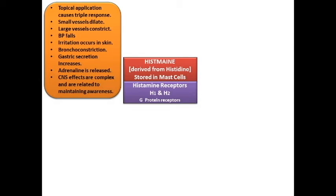The triple response also relates to dilatation of small vessels. Small vessels are dilated by histamine through the release of EDRF — endothelial-derived relaxing factor — which causes vessel dilatation. At the same time, large vessels of the body constrict. Blood pressure generally falls after injection of histamine, attributed to both H1 and H2 responses. The H1 response is an immediate fall, while the H2-mediated fall is delayed and more sustained. Irritation of skin and nerve endings can also inflict pain.